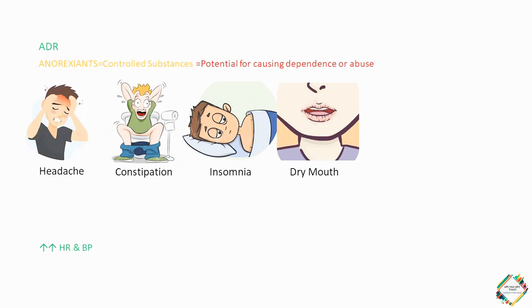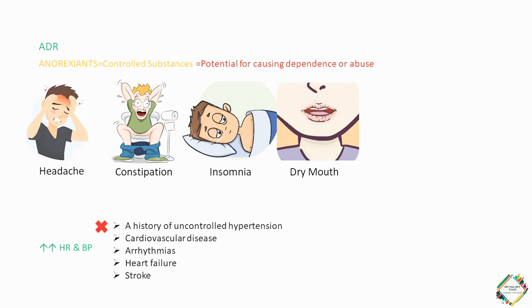Therefore, these drugs should be avoided in patients with a history of uncontrolled hypertension, cardiovascular disease, arrhythmias, heart failure, or stroke. At the same time, these anorexiants would increase the levels of neurotransmitters such as norepinephrine and dopamine. Therefore, the concomitant use of these anorexiants with monoamine oxidase inhibitors or other sympathomimetics should be avoided.